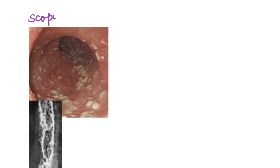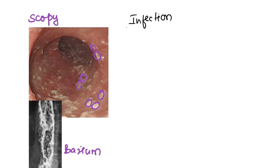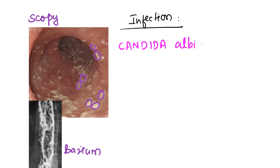Now look at this picture — the upper GI scopy finding and the barium swallow finding below. What you see very characteristically is a typical white appearance inside the esophagus. This white appearance is called thrush — which you may have studied in the context of oral thrush. The organism responsible is Candida albicans. This is esophageal candidiasis.